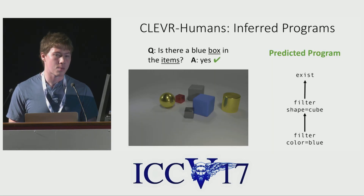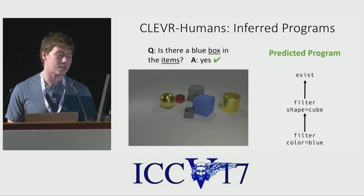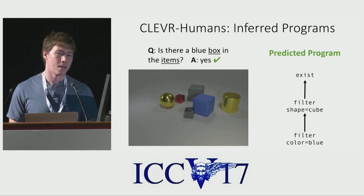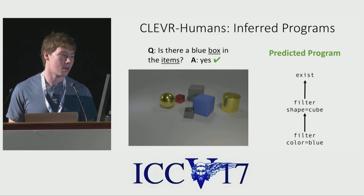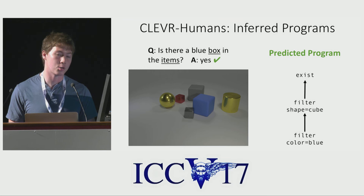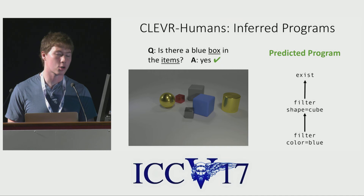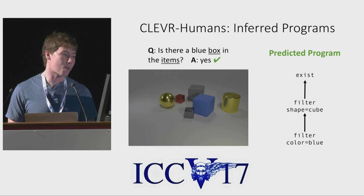We can gain some additional interpretability into the predictions of our model by examining the types of programs that it synthesizes for questions from CLEVR-Humans. In one example, the question asks: is there a blue box in the items? This question is perfectly expressible using the programming language from CLEVR, but the words 'box' and 'items' never appeared in the CLEVR dataset. The model needs to associate the functional primitives with these new words through the joint fine-tuning process. And we see that in the predicted program, the model correctly learns to identify the filter_shape equals cube function with the word 'box' in the question.